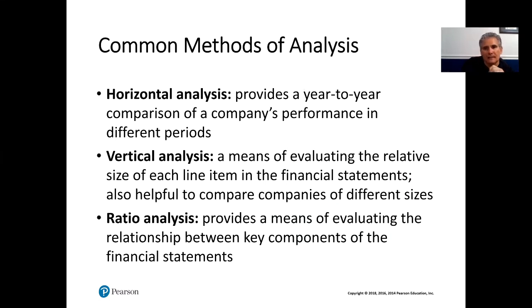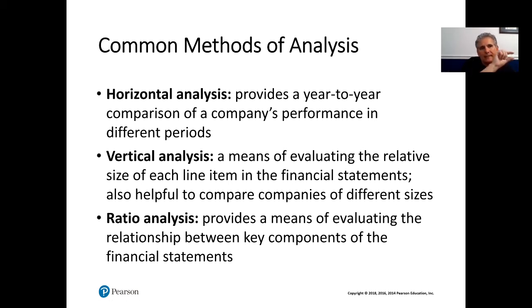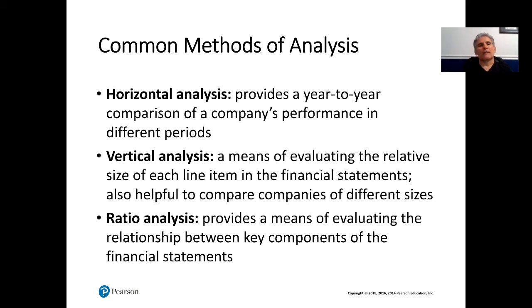There are common methods of analysis. The textbook refers to horizontal analysis, which provides a year-to-year comparison of a company's performance in different periods. If you imagine sales plotted across years — 2020, 2019, 2018 — you're analyzing sales horizontally, seeing how they change from year to year. Vertical analysis is a means of evaluating the relative size of each line item in the financial statements, and it's also helpful for comparing companies of different sizes.